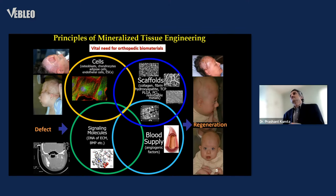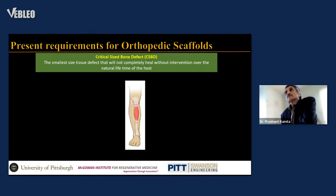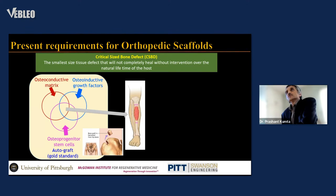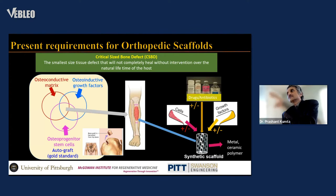For orthopedic scaffolds, if you have small defects, then the body regenerates itself. If you have a critical-size bone defect, which is much larger than what the body can heal, then there is a problem. Typically we use a synthetic or natural material that can contribute osteoconductivity and osteoinductivity in the form of growth factors, combined with cells into a synthetic scaffold. That scaffold could be a metal, ceramic, or polymer. For tissue engineering, we need the material to resolve — typically a resorbable polymer like PLA or PLGA, or hydroxyapatite ceramic.